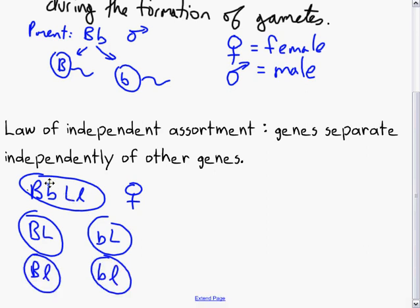So we could have this gene in one of the gametes with the other dominant gene, this dominant B with the lowercase L. We can have the lowercase b with the uppercase L. You essentially get a random mixing of all the genes. They don't prefer one or the other.